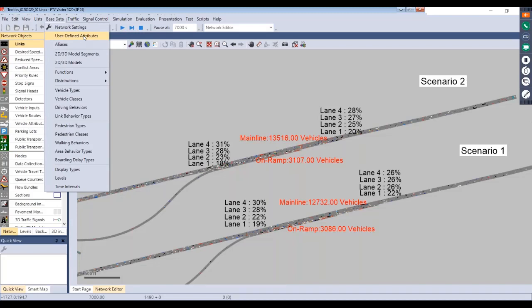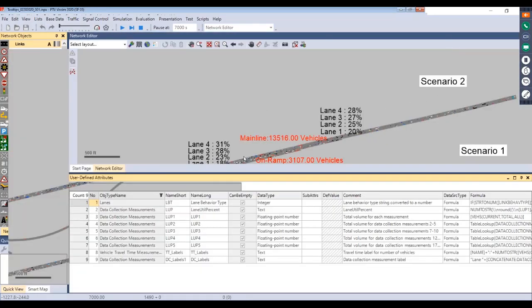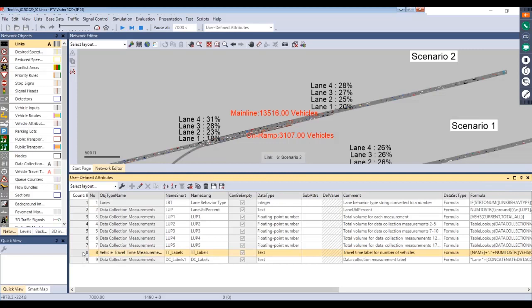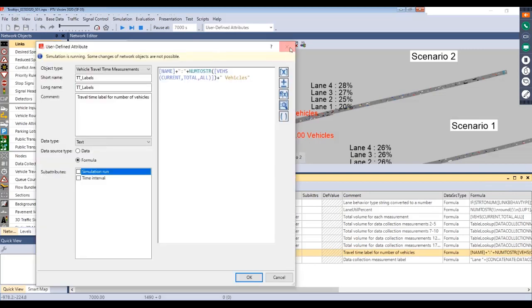All of the user defined attributes can be set up under base data. Here I'll just pull up one option for displaying that travel time label.